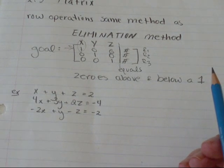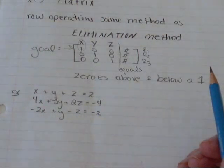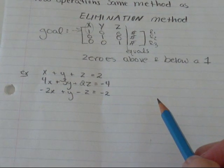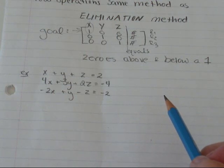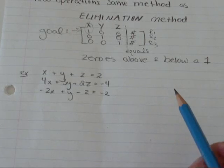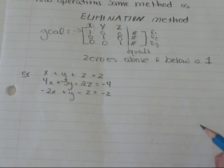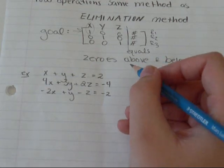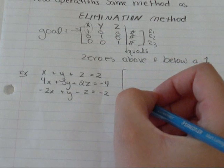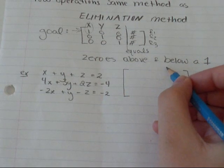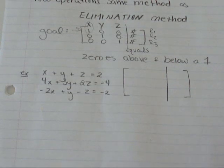So I'm going to do an example. x plus y plus z equals two. 4x plus 3y plus 2z equals negative 4. Negative 2x plus y minus z equals negative 2. I need to write this in a matrix, so I'm going to draw my square brackets and my vertical line.